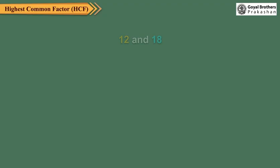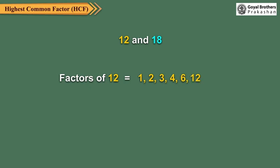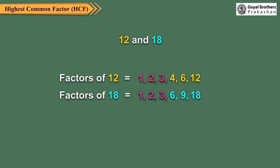Consider the two numbers 12 and 18. Factors of 12 are 1, 2, 3, 4, 6 and 12. Factors of 18 are 1, 2, 3, 6, 9 and 18. You can see here that 1, 2, 3 and 6 are the factors which are common to both 12 and 18.